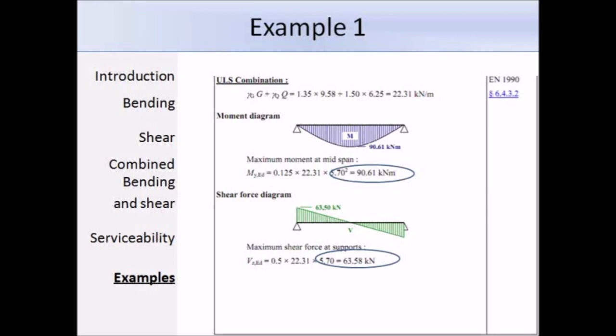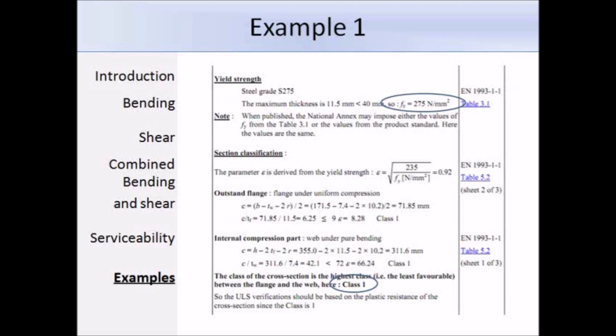This next part deals with the section classification. This bit's already been done as part of the bending example, so I'll just run through it. The yield strength of the material is 275 N/mm², and then the section is class 1.